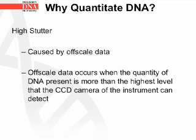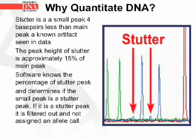High stutter is caused by off-scale data. Off-scale data occurs when the quantity of DNA present is more than the highest level that the CCD camera of the instrument can detect. First, let's go into what stutter is. Stutter is a small peak that is four base pairs less than the main peak. This is a known artifact, and it is seen in data.